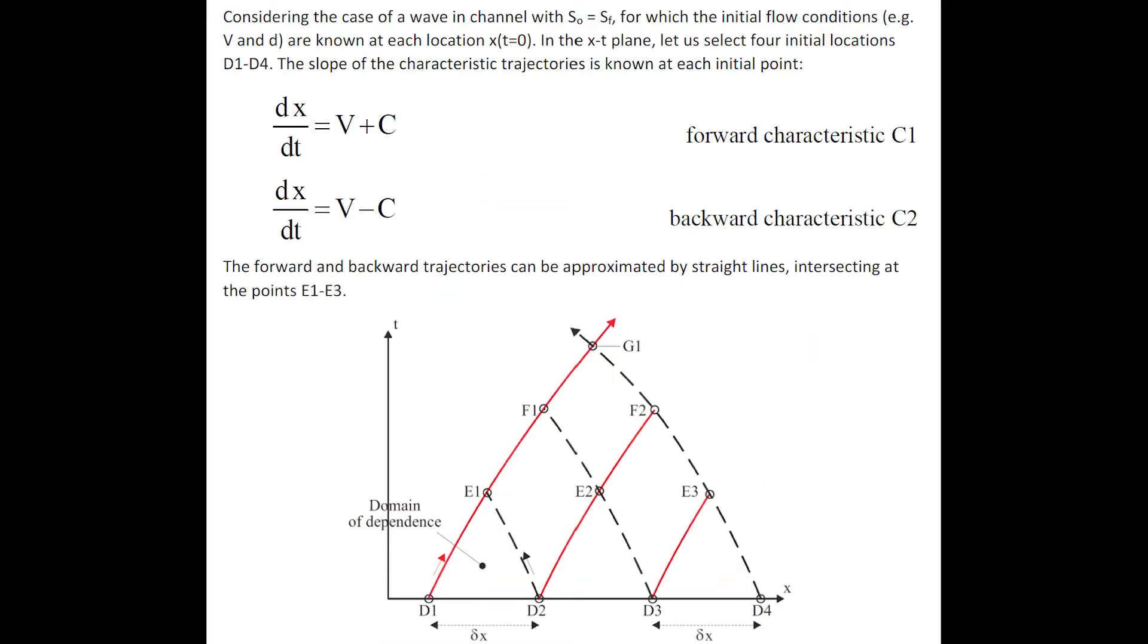Let us look at the simple case where S0 equals Sf, and for which the initial flow conditions are known at locations d1 to d4. At each of these locations, the slope of the characteristic trajectory is known, and the forward and backward characteristics can be drawn.